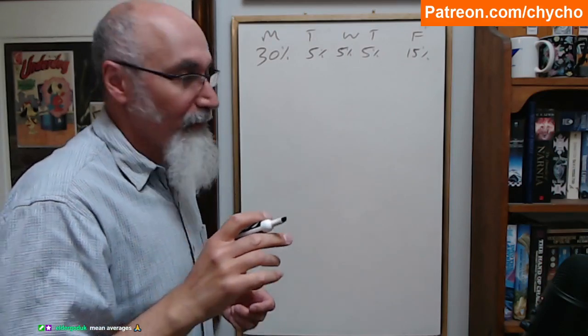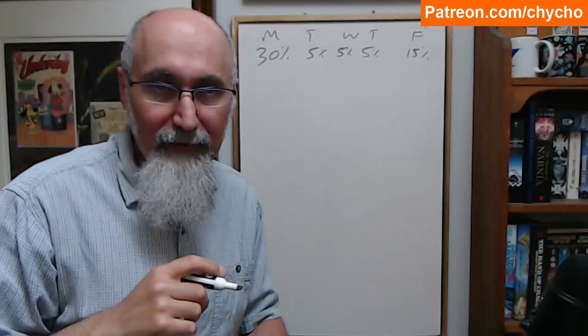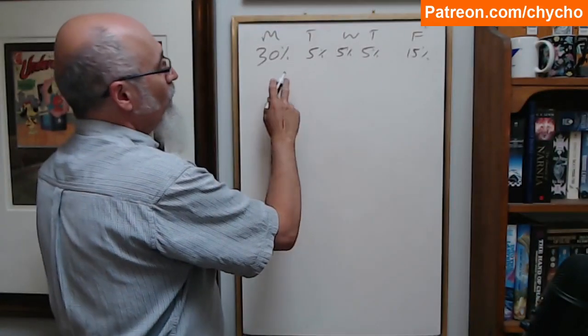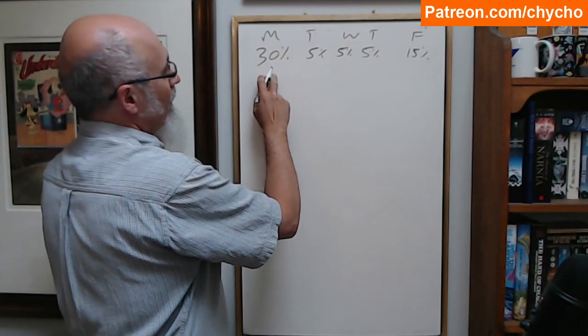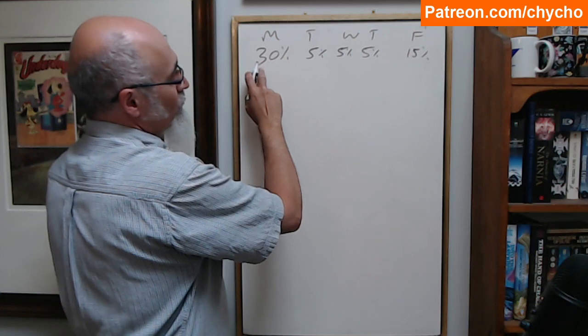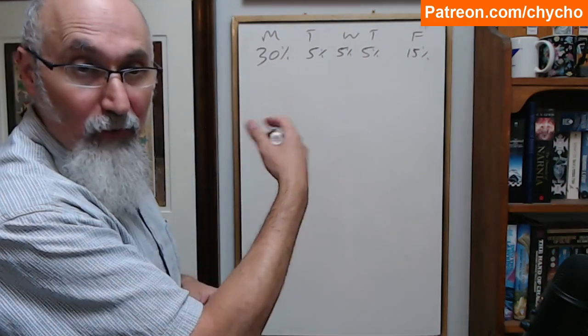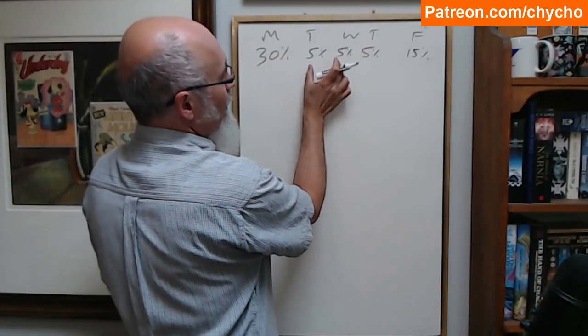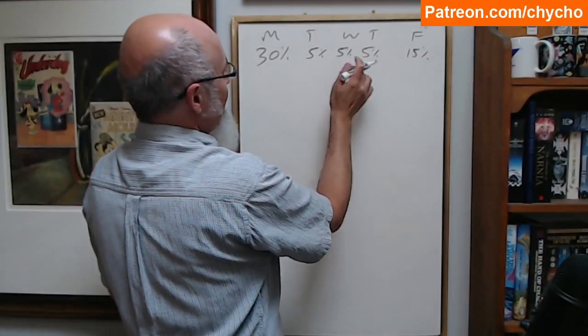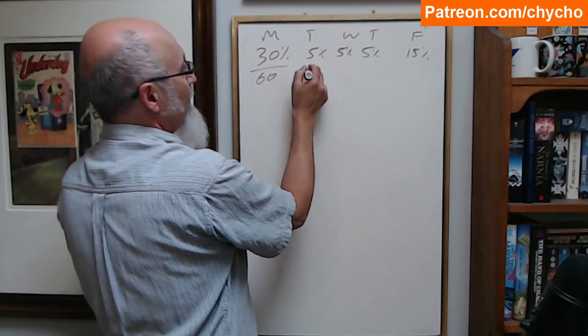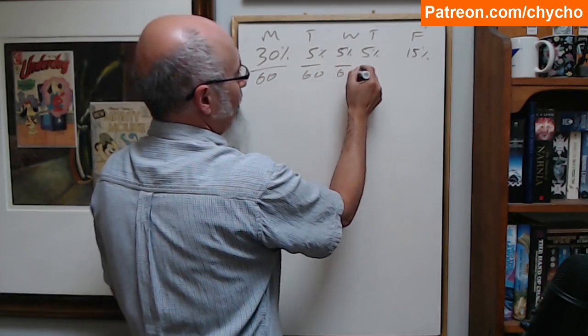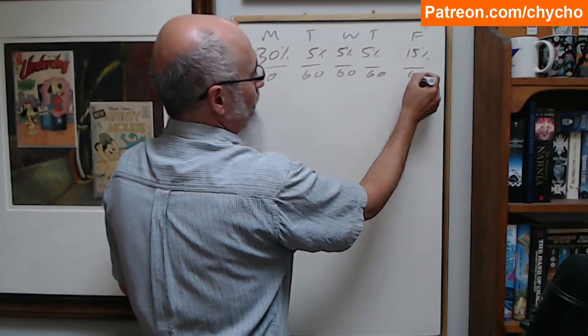It's averages, yeah. So, what you end up doing is, what you could do is just total up the thing. So, this is 30, 40, 50, 60. So, all of these, you can divide by 60, right? 60.